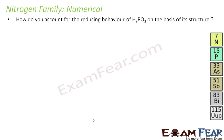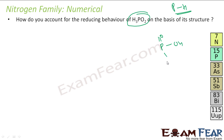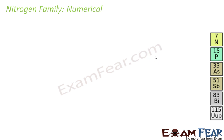The first question: how do you account for the reducing behavior of H3PO2 based on its structure? As stated, reducing behavior depends on the number of P-H bonds. The structure of H3PO2 has two P-H bonds, so it has good reducing characteristics.